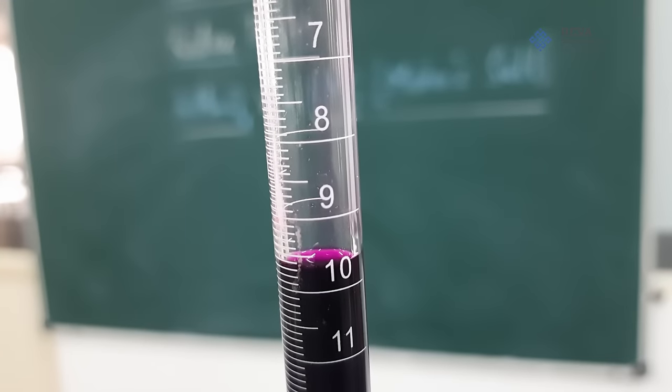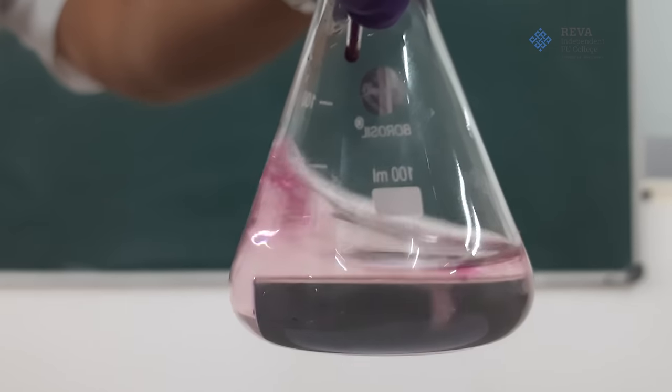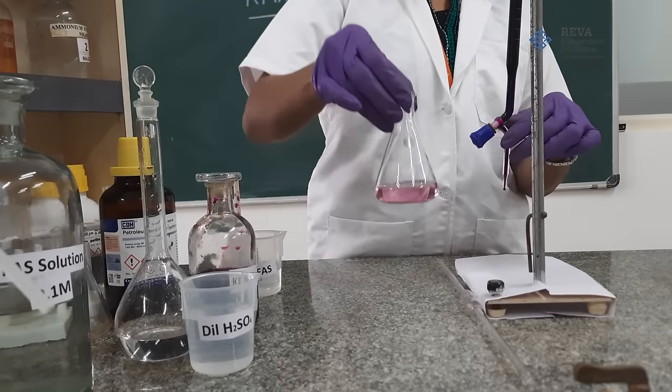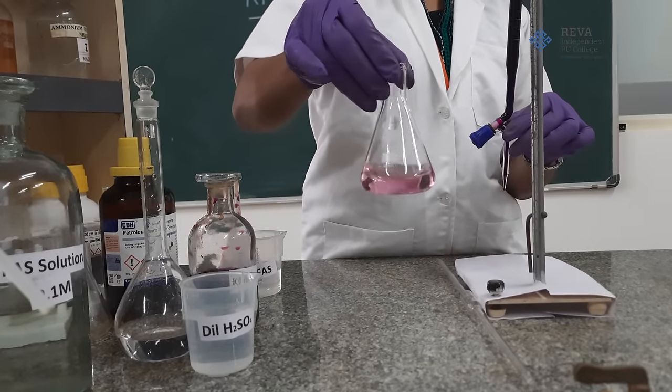As it is reaching an end point, we can see a local pink color which disappears slowly. When the solution in conical flask turns permanent pale pink color stop the titration.